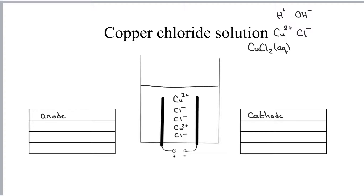As soon as you turn it on, if you've got a bulb it's going to light, and the positive ions are going to be attracted to the cathode, and the negative ions are going to be attracted to the anode. So the cathode is going to have a coating of a sort of pinky orangey metal, which of course is going to be copper. What happens here is the Cu2+ ions become copper by gaining two electrons each. So therefore at the cathode we have got reduction.